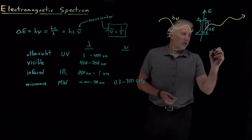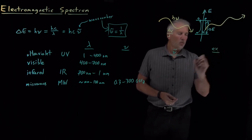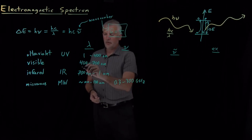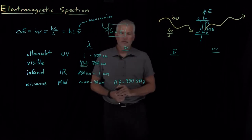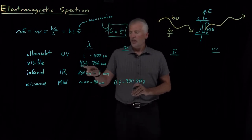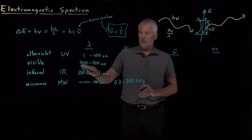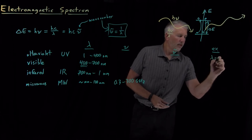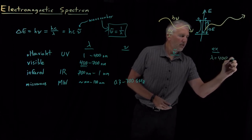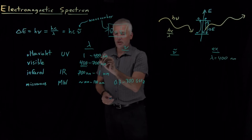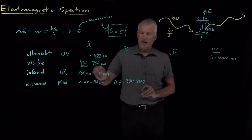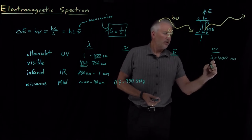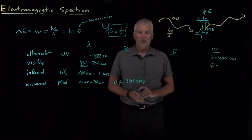Let's work a quick example for a photon that we're somewhat comfortable with the units for. Let's say we have a visible photon just on the edge of the visible spectrum — 400 nanometers in wavelength. That's also just on the border of the ultraviolet; it's on the very violet edge of the visible spectrum. I'd like to know what is the wave number associated with that photon.